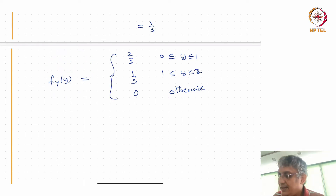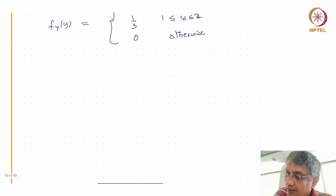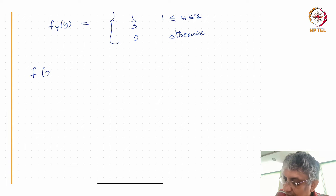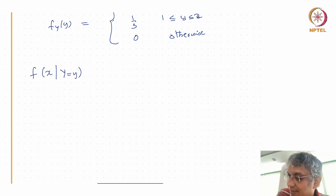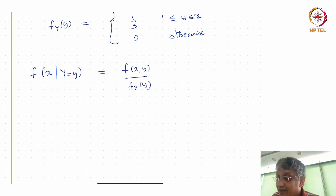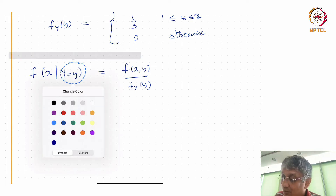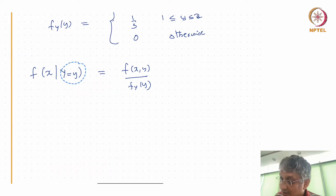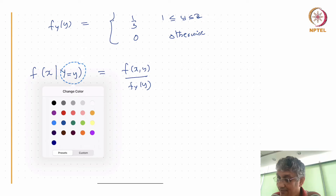That's the marginal density. Now let's compute the conditional density of X given Y = y. That's going to be equal to f(x, y) divided by f_Y(y), where y is fixed and x is the variable that's changing.